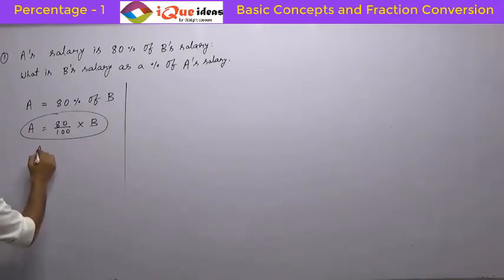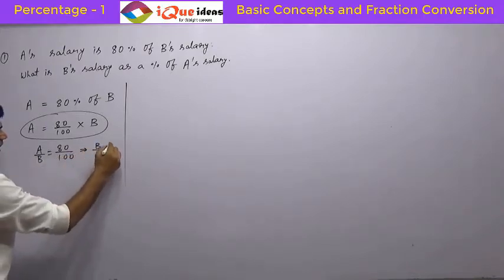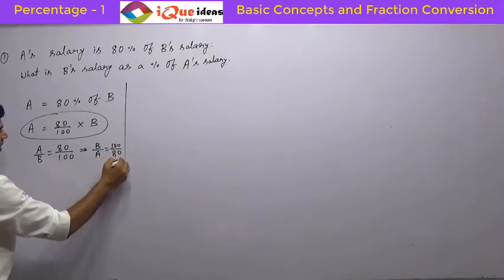So from here, we get this relation, A is equal to 80 by 100 or we can get A by B equal to 80 by 100, or from here, we can get B by A equal to 100 by 80. Look at this question.